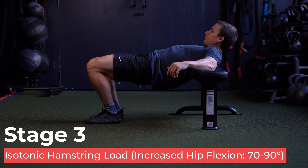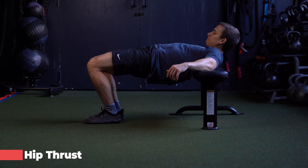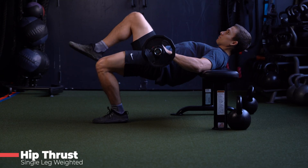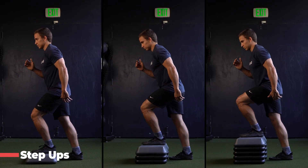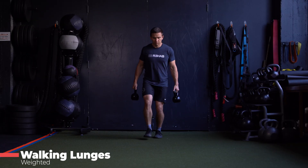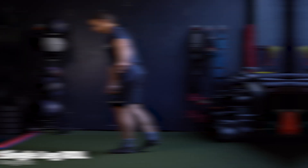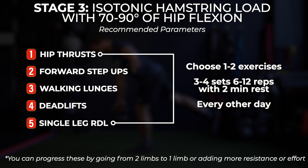Stage 3: isotonic exercises in positions of increased hip flexion, 70 to 90 degrees. Options include hip thrust — bilateral, single leg, or weighted — forward step ups progressing from low to medium to high, walking lunges unweighted then weighted, deadlifts, and single leg RDLs. Pick one to two exercises to be performed every other day for three to four sets of six to 12 repetitions — heavy, slow, and tolerable at first — but you can gradually increase the speed of the movements over time. You can also continue with isometrics on the other days.